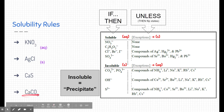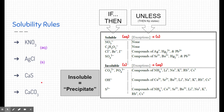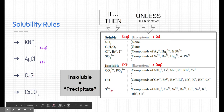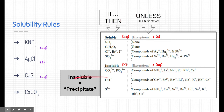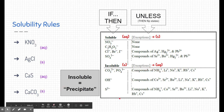Let's do the third and fourth examples — this might be a good time to pause the video and figure them out yourself. For the third example: sulfate is listed as insoluble in the rules. Sulfate is attached to calcium, and looking at the exceptions list, calcium is there — so it flips and becomes aqueous. For the fourth: carbonate is insoluble, and calcium is not attached to carbonate here, so this one is a precipitate — it's solid.